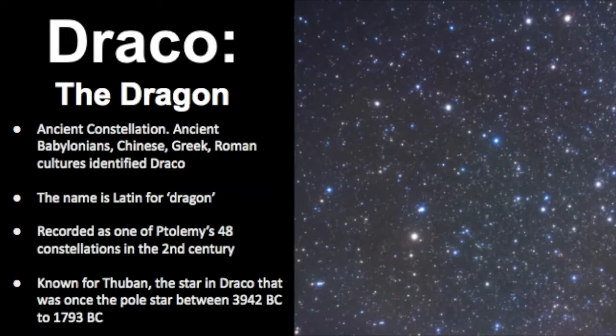The name Draco is Latin for dragon and it was recorded as one of Ptolemy's 48 constellations in the second century, which was the authority in the field of astronomy for many centuries. Draco is known for its star called Thuban, which was once the pole star between 3942 BC and 1793 BC.